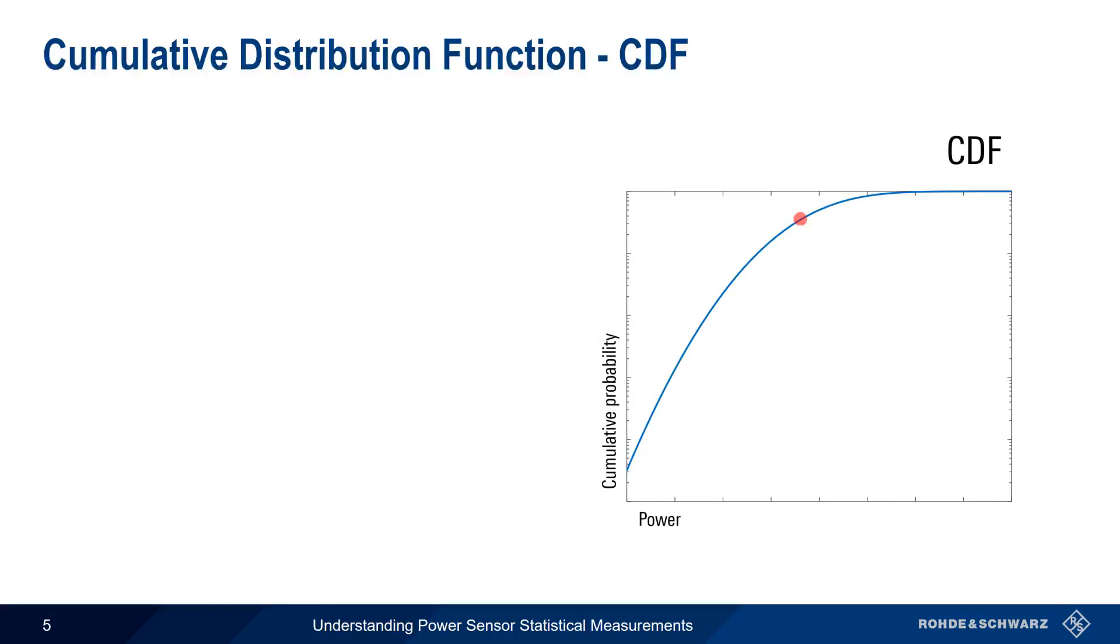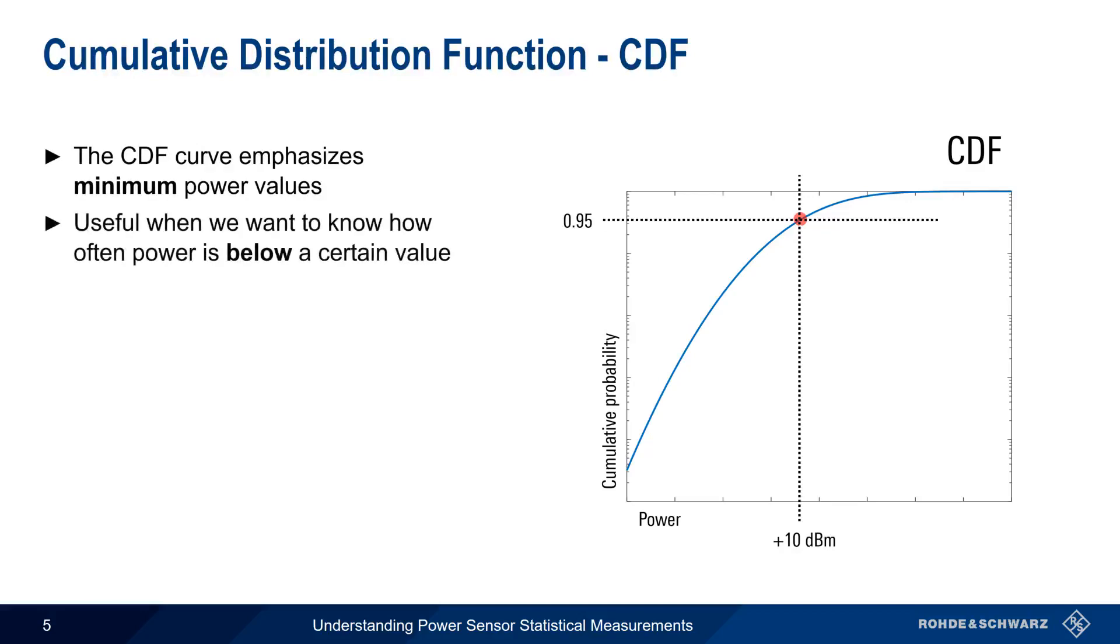Let's pick a point on our CDF curve. At this point, we can say that 95% of the time, the power level is plus 10 dBm or less. CDF curves emphasize minimum values. In other words, a CDF curve is useful if we want to know what percentage of time the signal's power is below a certain value.